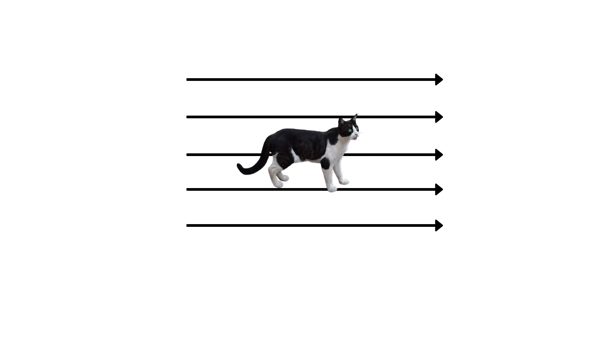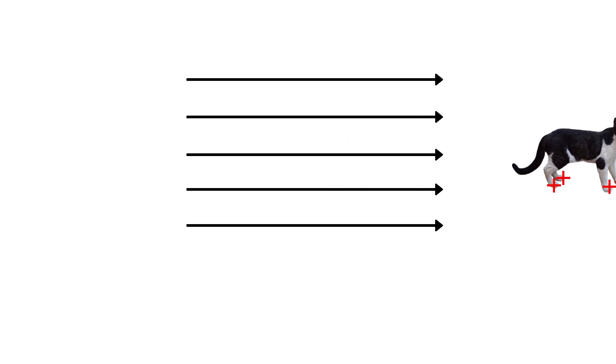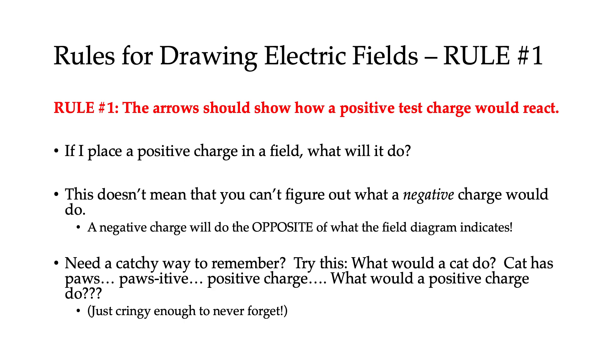Now if you need a catchy way to remember that the arrow should show how a positive test charge reacts in a field, try this: What would a cat do in the field? Well, a cat has paws — positive. What would a positive charge do in the field? And that might just be cringy enough for you to never forget it.